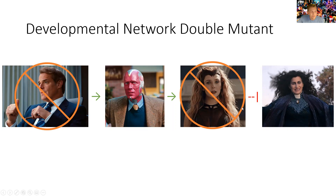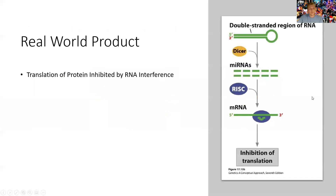If we had a double mutant where Dr. Hayward is not functioning properly and Wanda is not functioning properly, we'd have the same result but for a different reason. Hayward is not activating Vision, so Wanda is not being activated and is dysfunctional as well. Agatha is not being blocked, and evil would prevail — we have a problem in our organism.